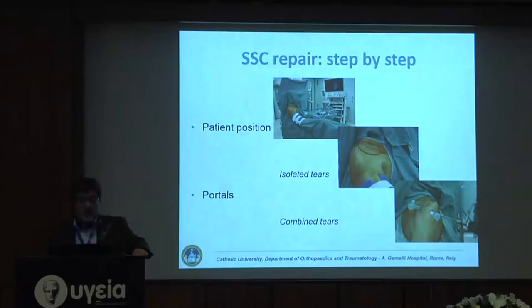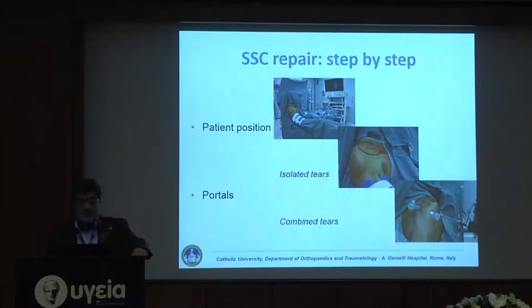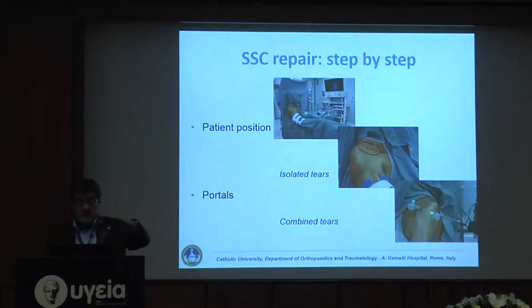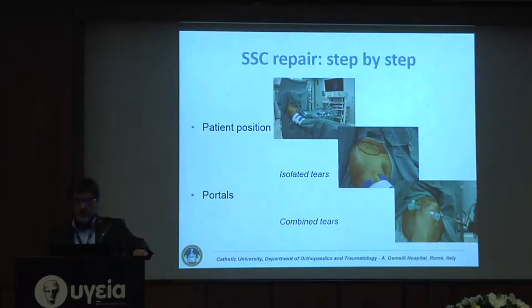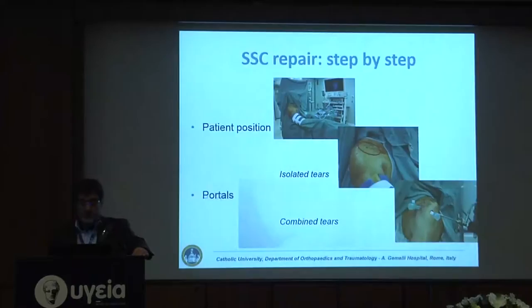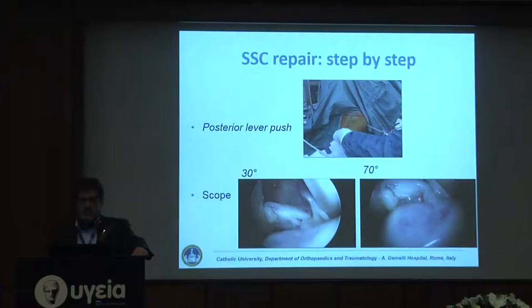Let's take a look at the step-by-step repair procedure. First, patient positioning: I use the beach-chair position for all my rotator cuff procedures, but this is especially important for subscapularis repair. The patient should be seated but not completely upright, so that the acromion is completely parallel to the floor. For an isolated tear, I use a 2-portal approach — antero-superior and a standard mid-lateral portal. For a combined tear with a posterior rotator cuff, I use a lateral and antero-superior approach, and I don't need the mid-lateral portal because the lateral cannula can be introduced into the joint through the rotator cuff repair.